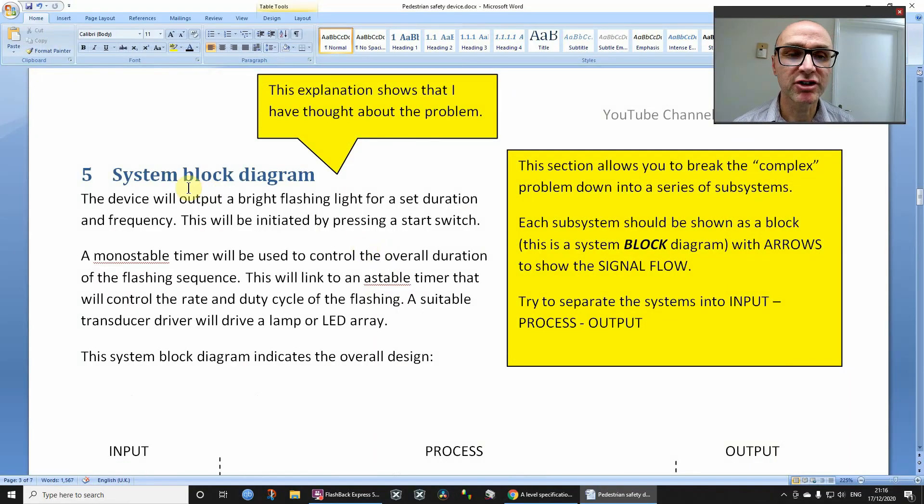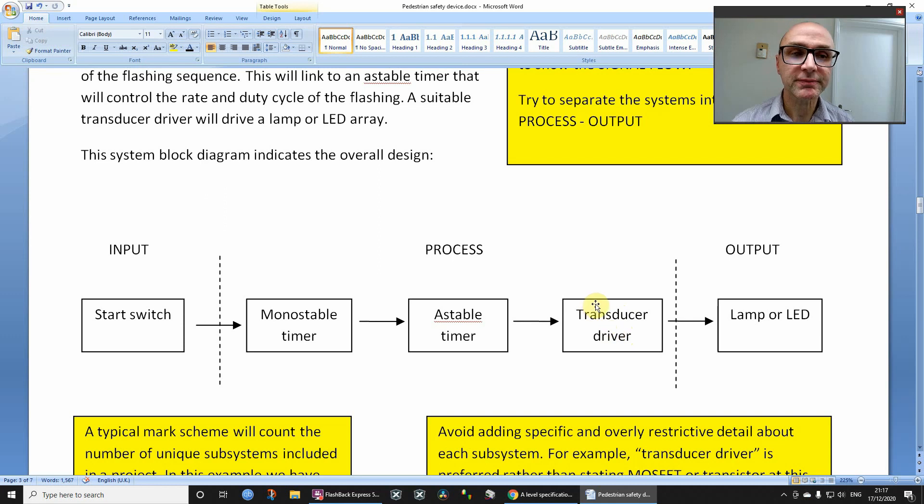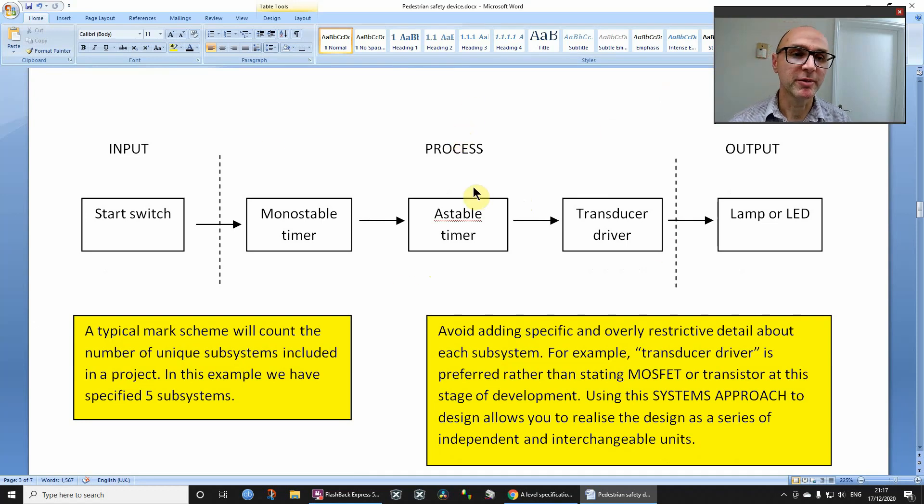Now, common to GCSE and A-level, a system block diagram is really going to help break up what is probably a fairly complex problem, or a complex product, into much smaller, more manageable chunks. Now, even though this example project here is just basically a flashing light, a flashing beacon, we could split that up into several different subsystems. Now, subsystem just takes an input, does process an output, just leave it fairly open for transducer driver, because then when you actually do your subsystem development, it gives you the opportunity to be flexible and actually change minded on exactly how you want to do it.